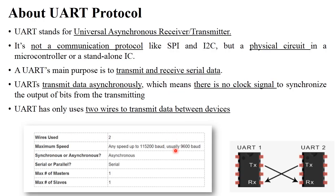Here is a basic specification of UART protocol. Only two wires are used for transmitting and receiving data. It has a 9600 baud rate, which is the maximum speed for transmitting and receiving information. UART works asynchronously — no clock signals are used. It is a serial protocol and supports only one master and one slave device for communication.